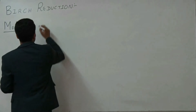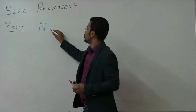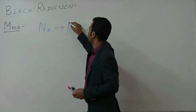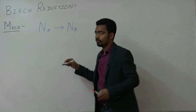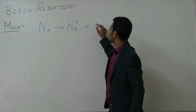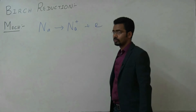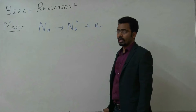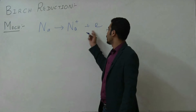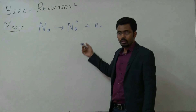What is the role of sodium metal? Sodium metal will donate the electron and form sodium plus and an electron. It depends how many sodium atoms will donate the electron based on how much electron is required.